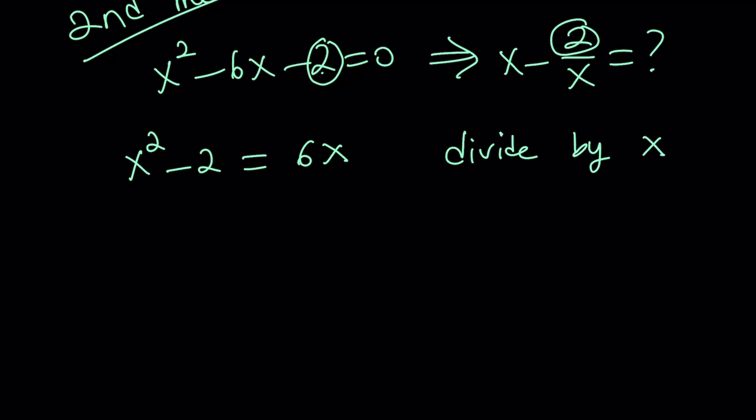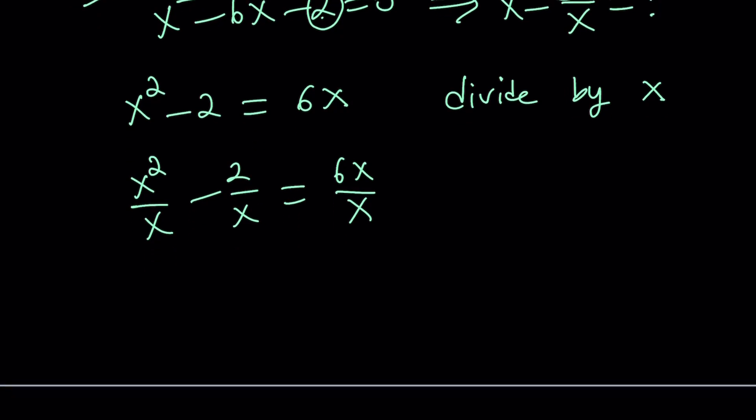And guess what that's going to do? This is going to actually do miracles, because when you do that, you're going to get the answer right away. Notice that x squared divided by x is x minus 2 over x. x does not equal 0, we know that. And we get the answer right away: x minus 2 over x equals 6.